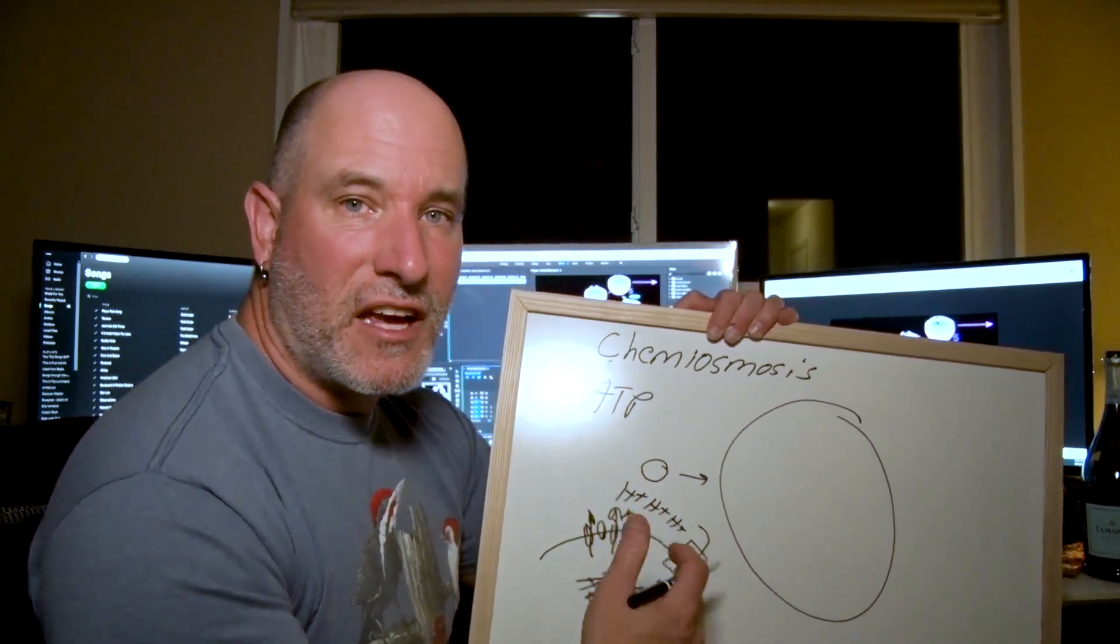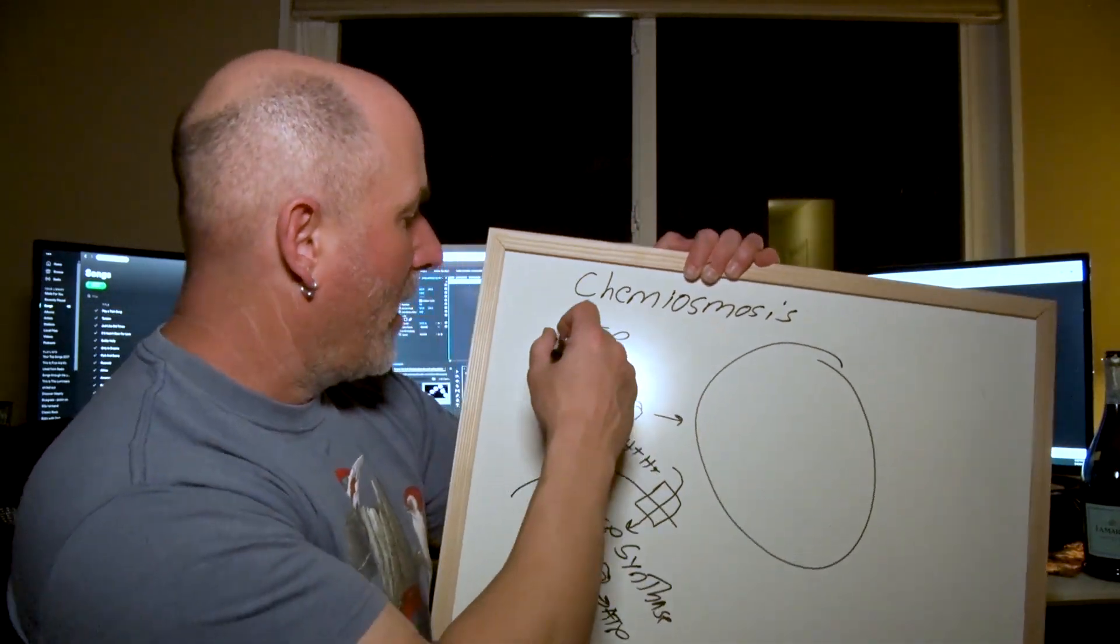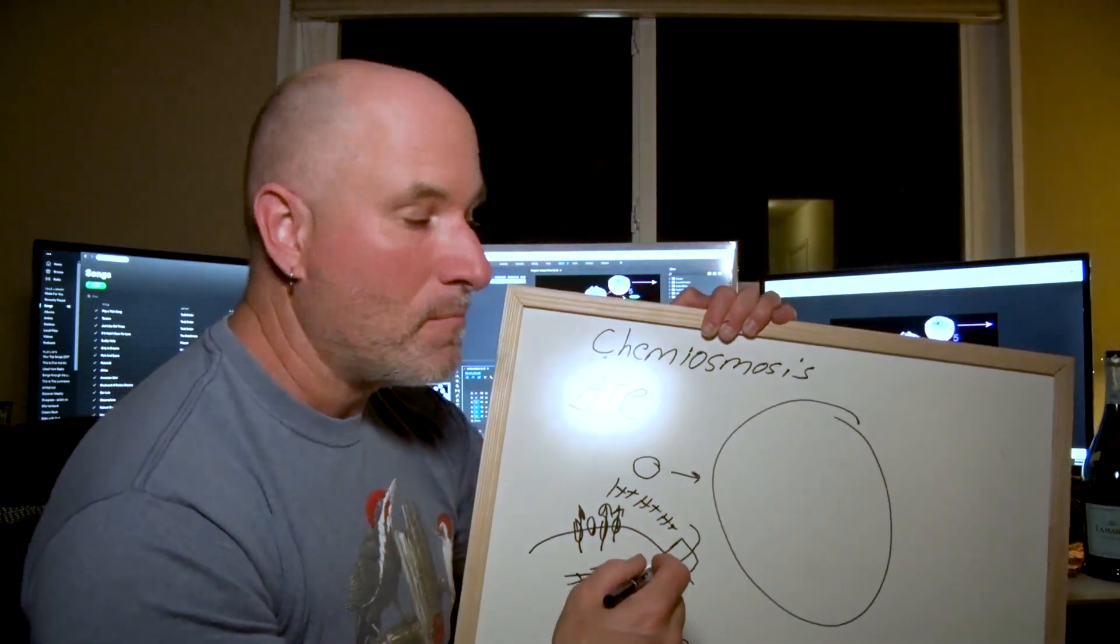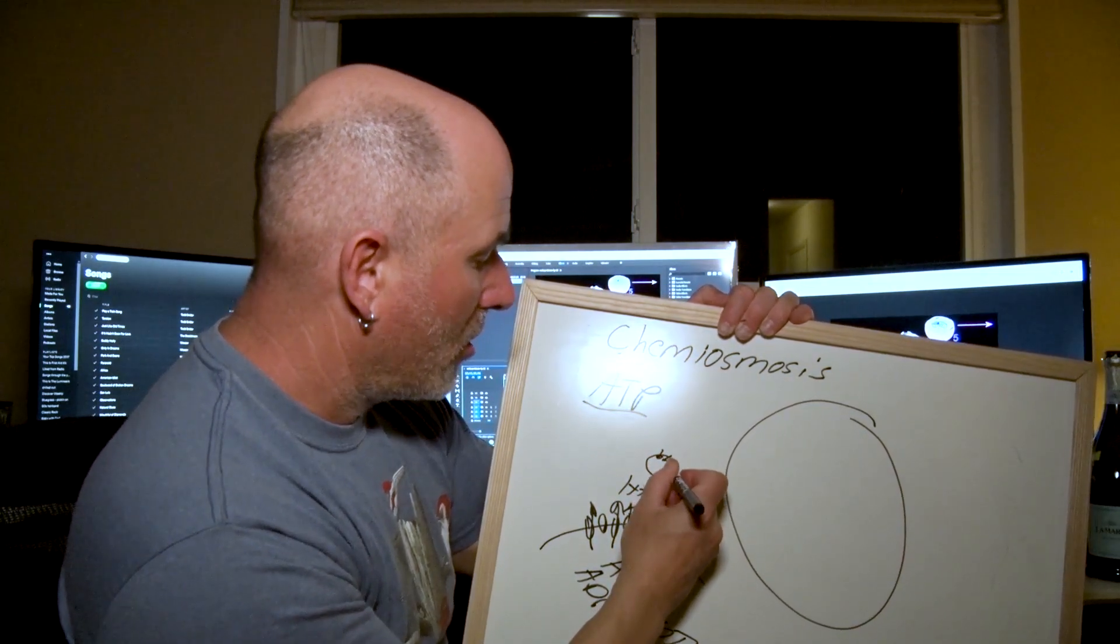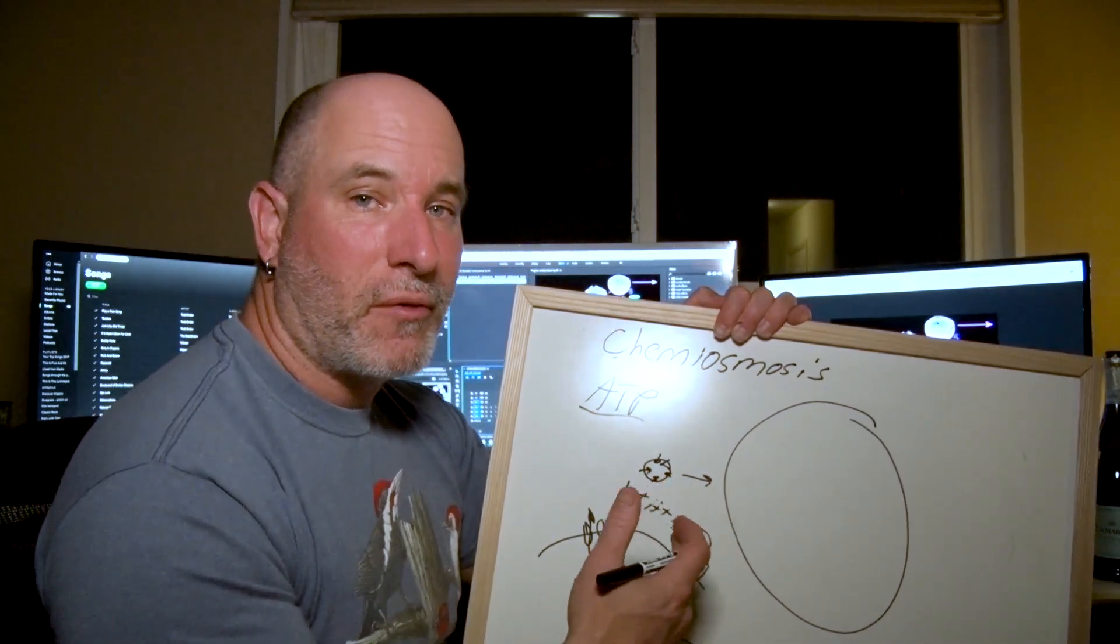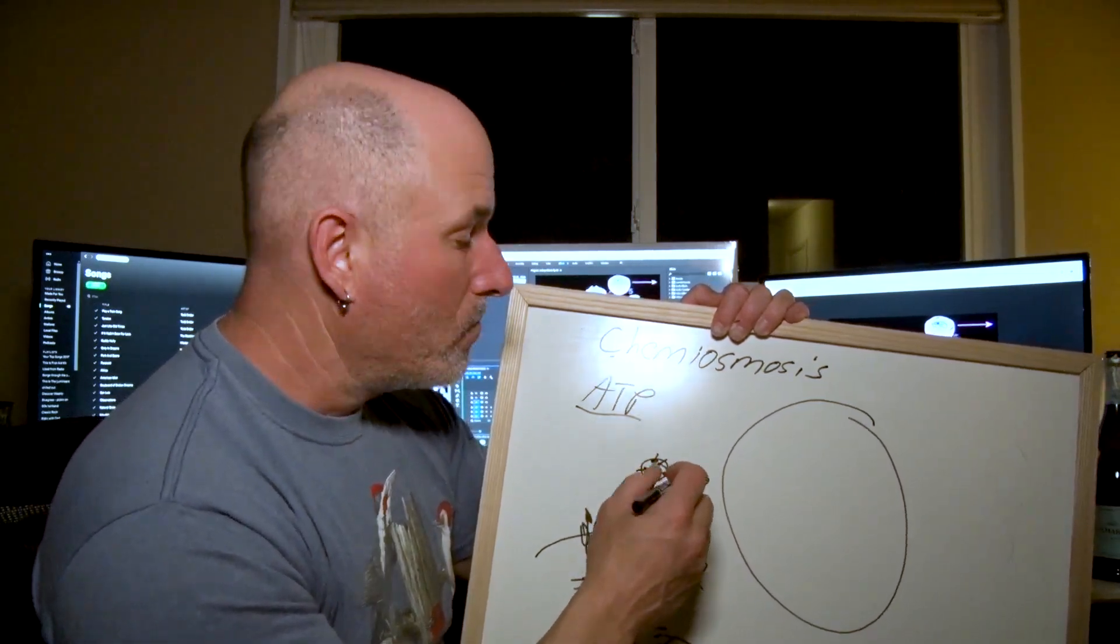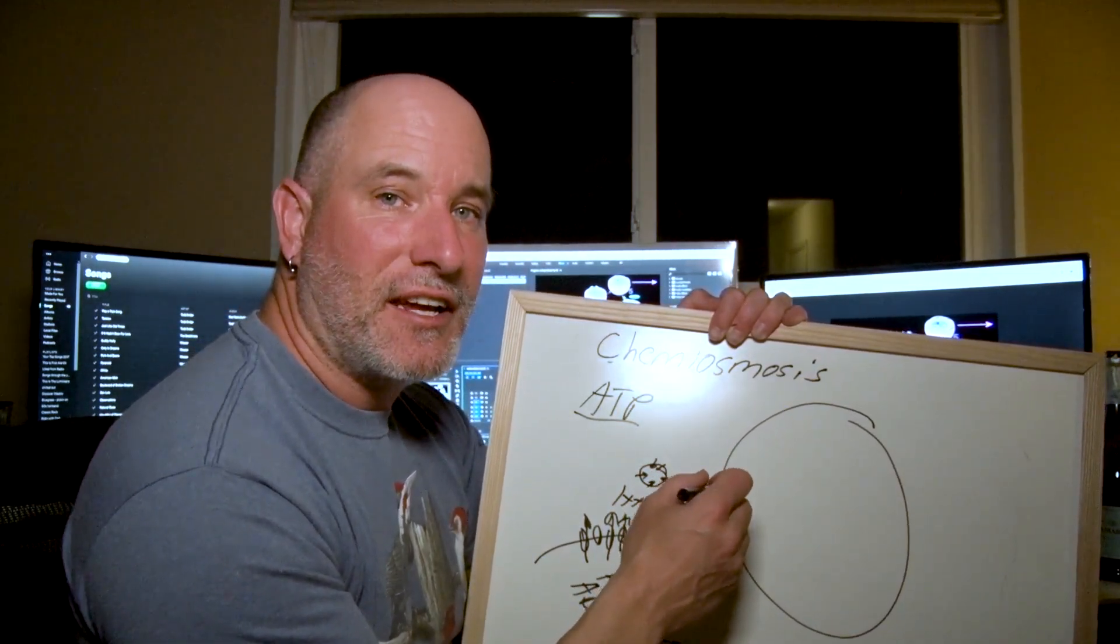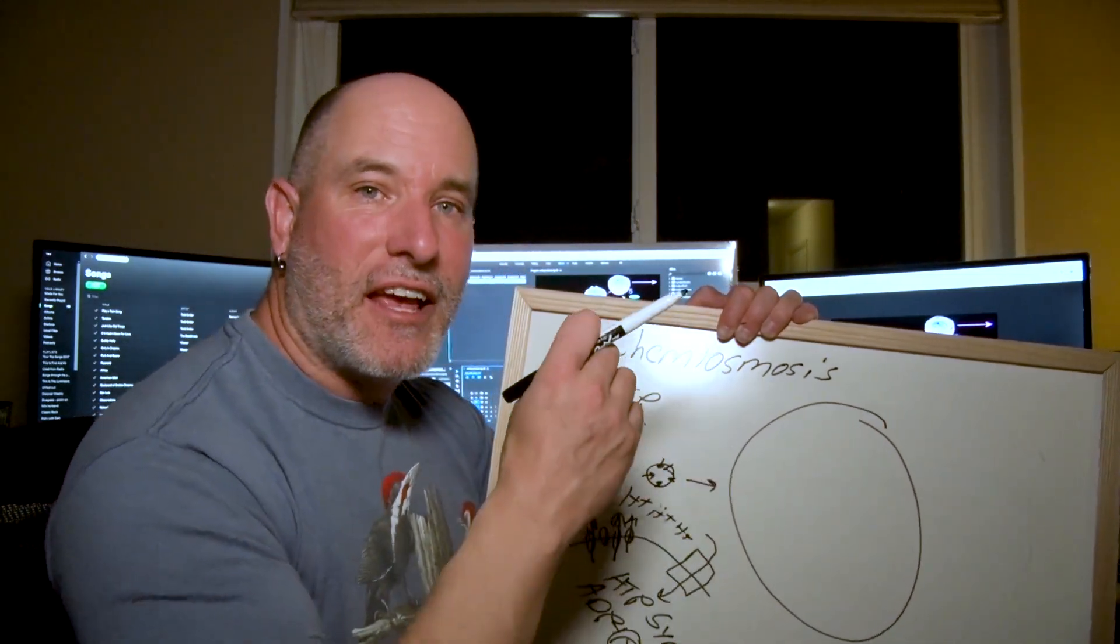Now prokaryotic cells, they're pumping it across their membrane here. So our surface to volume area ratio matters because as these cells get larger and larger and larger they will produce less and less ATP relative to their volume. So it's energy production that limits the size of a prokaryotic cell. It has nothing to do with diffusion.